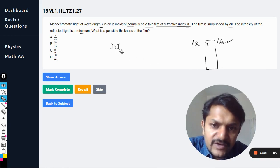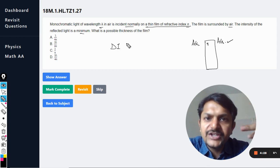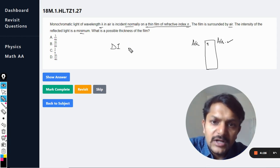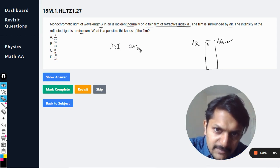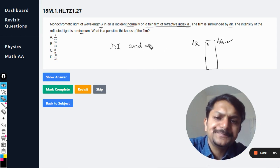The normal formula comes out to be 2nd which is equal to m lambda. In the case of destructive interference, I can show you this formula in the data booklet also.